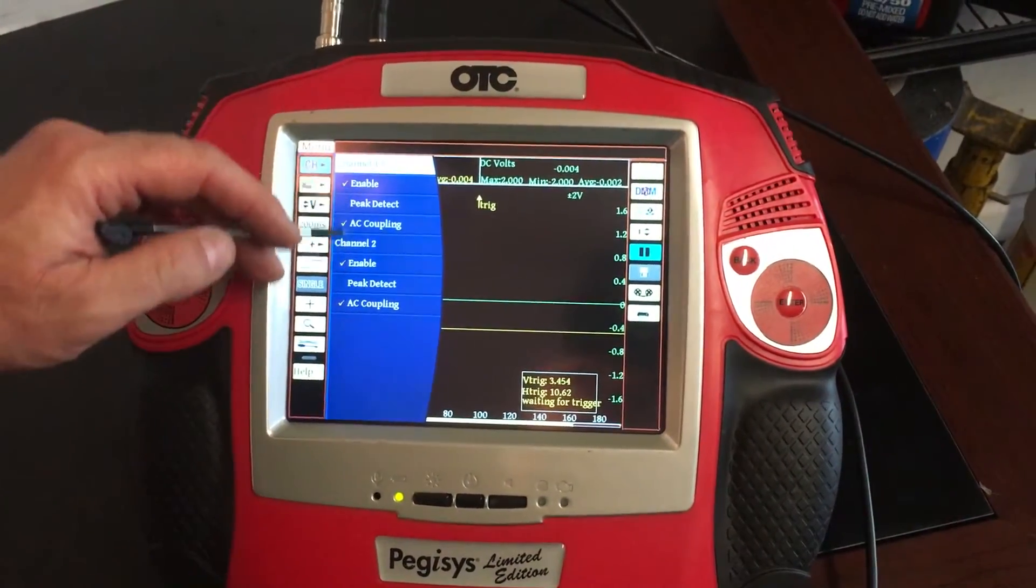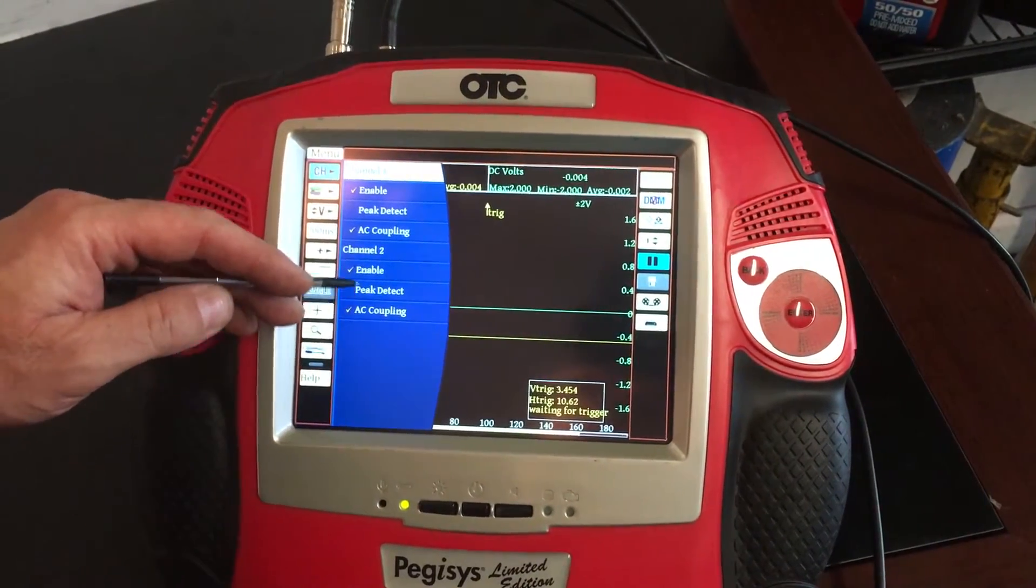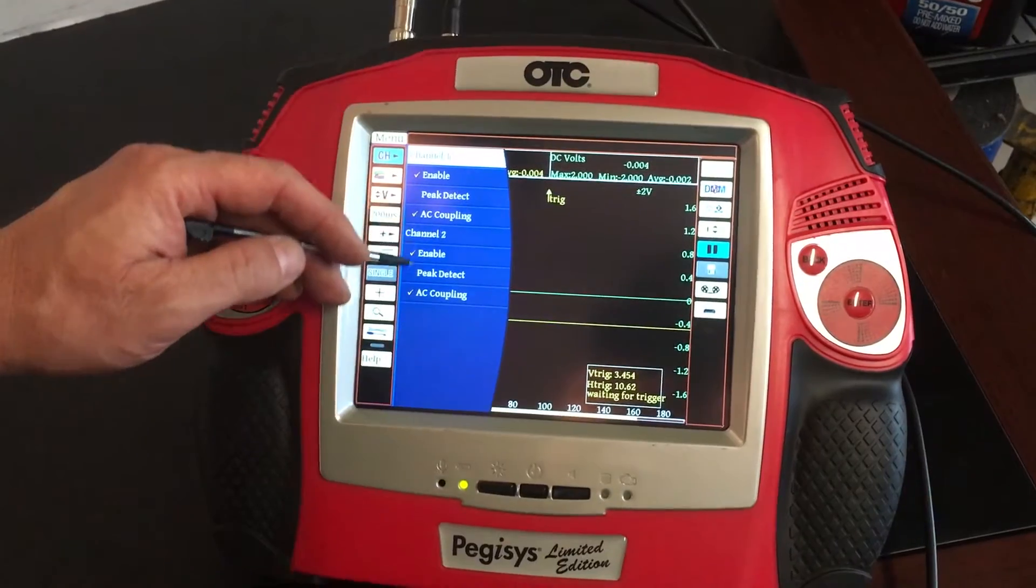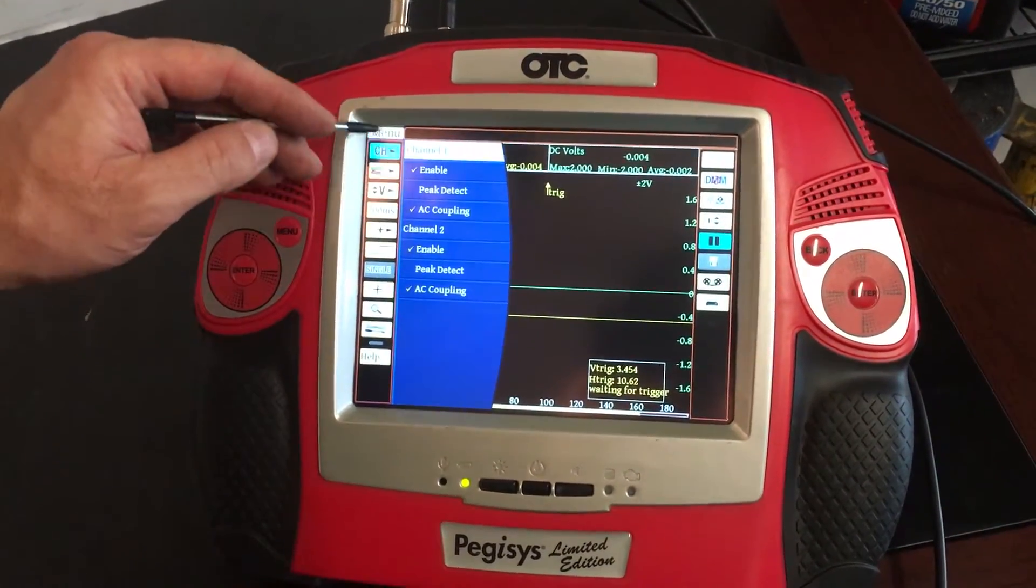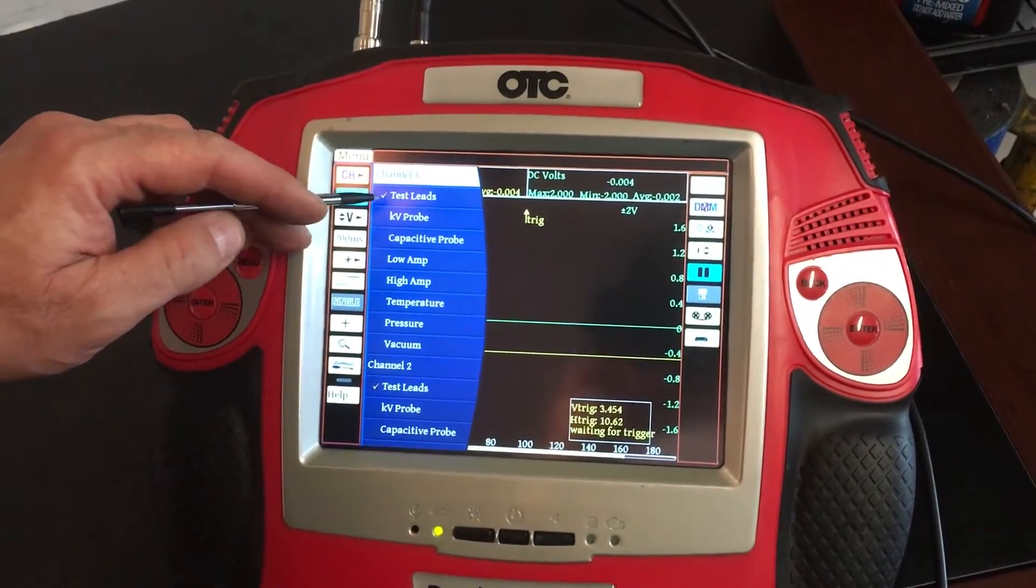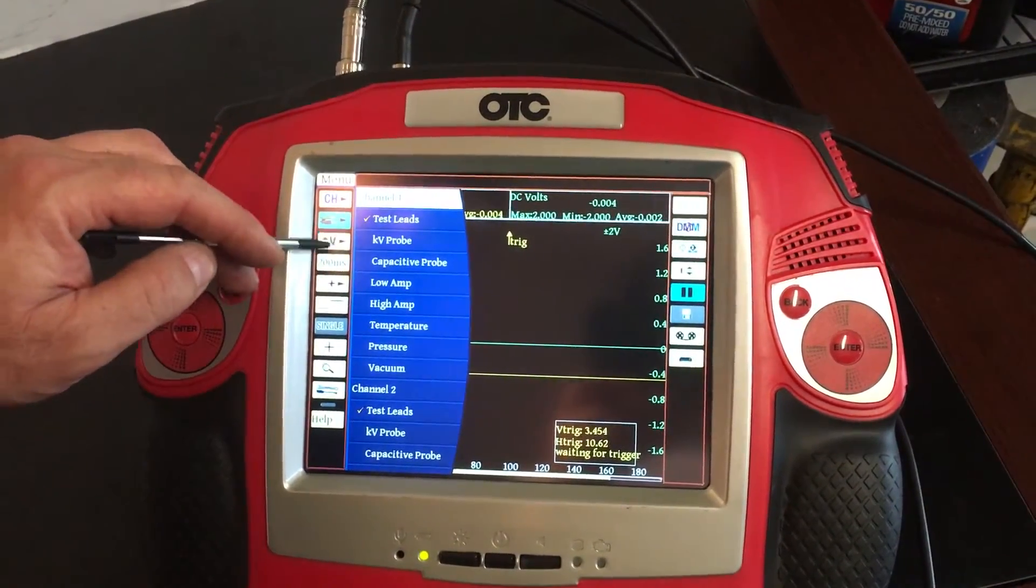you're going to enable your channel, whichever you want to look at, you're going to also enable your AC coupling because it's going to make AC voltage. Then on your test lead, just use regular leads.